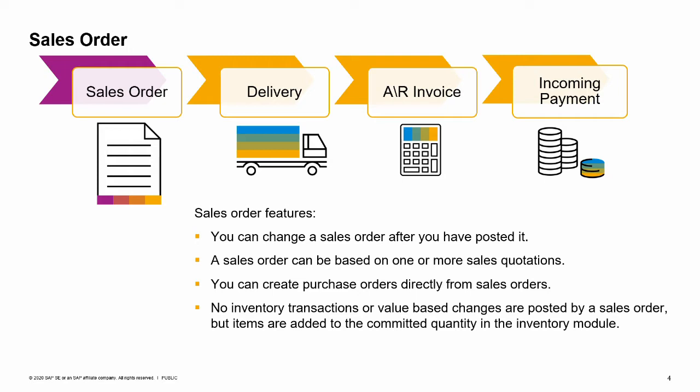A sales order can be based on one or more sales quotations. One unique feature of SAP Business One is that you can create purchase orders directly from sales orders, thereby streamlining your supply chain as well as material requirements planning processes. In SAP Business One, a sales order affects the available stock level, meaning the stock available to sell is reduced by the quantity in the order. When you enter sales orders, no inventory transactions or value-based changes are posted to the general ledger, but the items are added to the committed quantity in the inventory module.